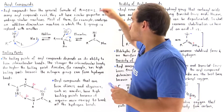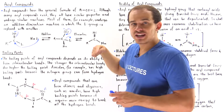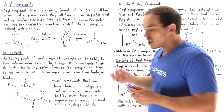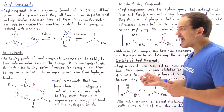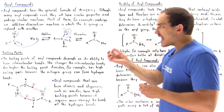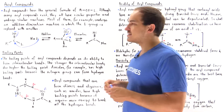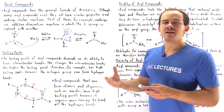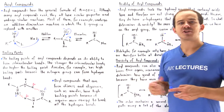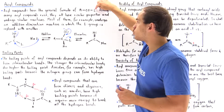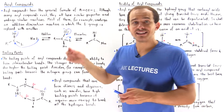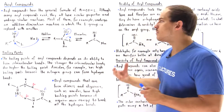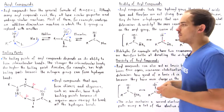The reason we label this with an L is because the most common type of reaction that acyl compounds undergo is an addition-elimination reaction, in which the L group acts as a leaving group and is replaced by some other type of group.